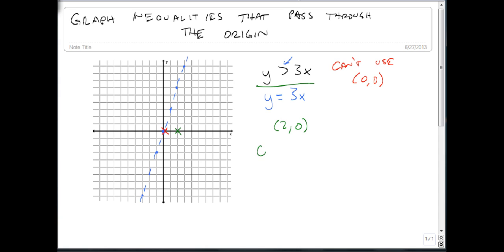So we go back to our original and plug it in. Is 0 bigger than 3 times 2? Is 0 bigger than 6? No, that's false. We know we don't shade that side. We shade this side.